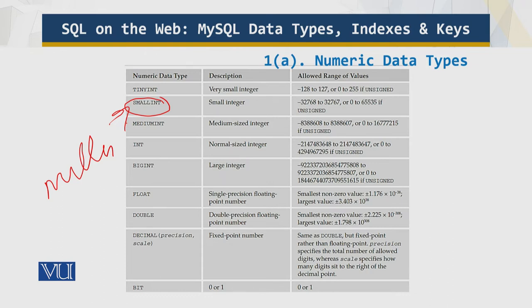You can add the attribute unsigned after a numeric data type when defining a field. An unsigned data type can only hold positive numbers. For example, TINYINT can hold a maximum of 127, but if you use unsigned, it can hold 255. Depending upon whether the number is positive or negative, the amount of space required to save that number is going to be different.